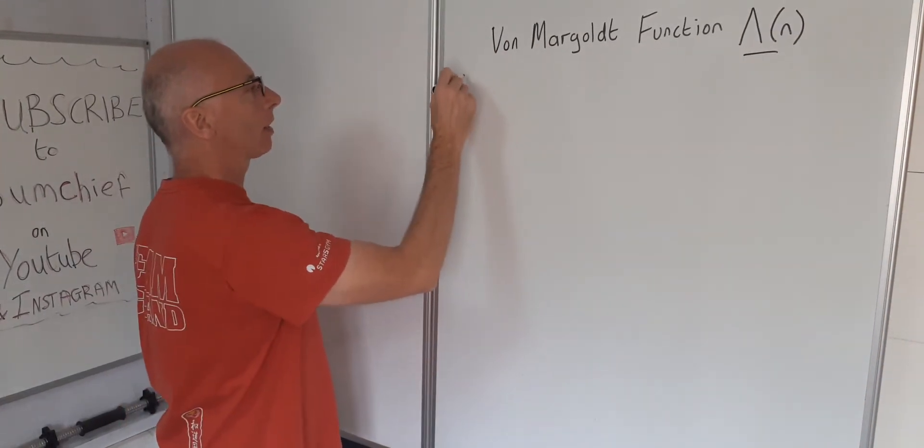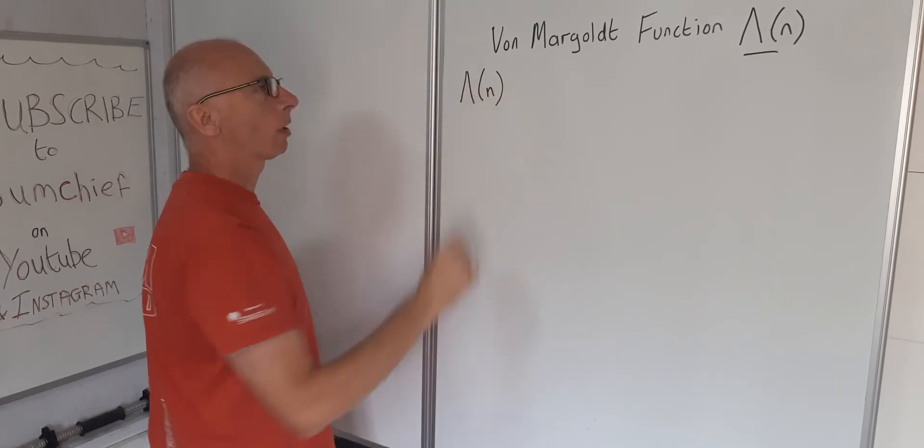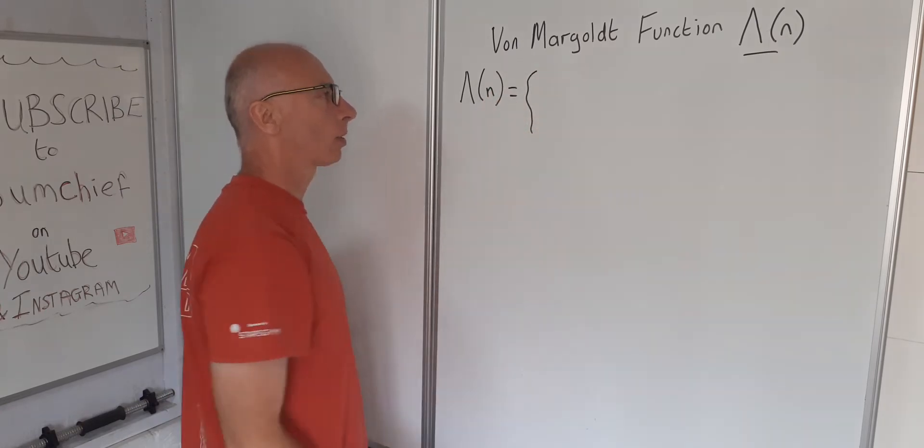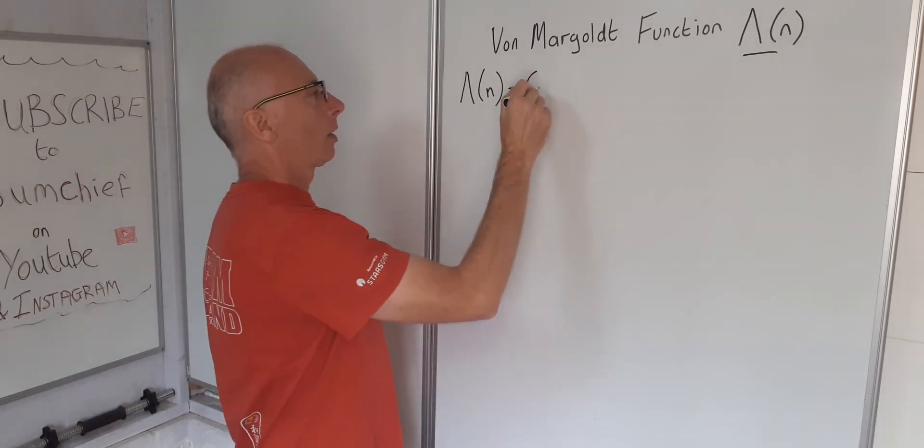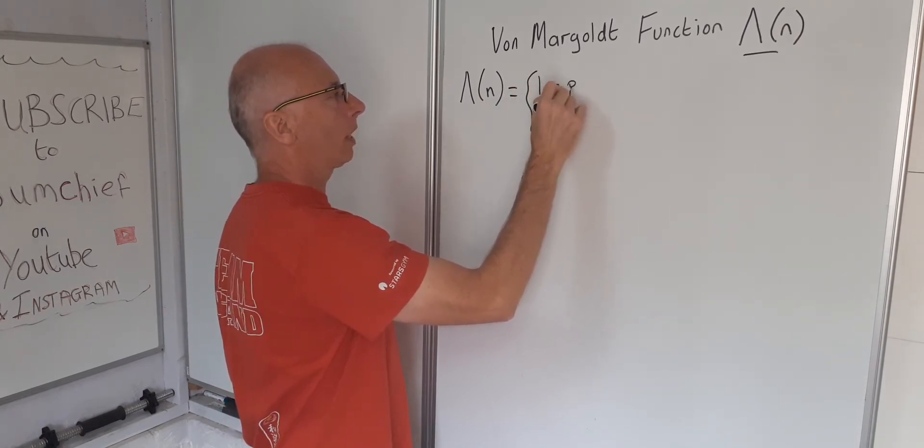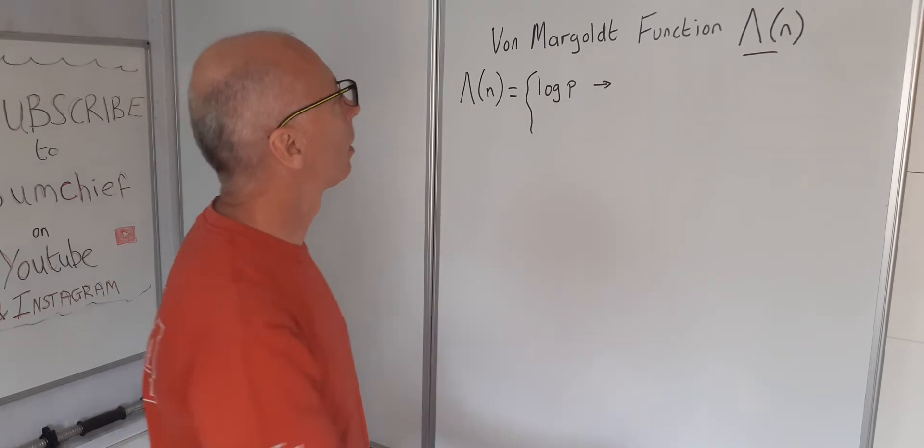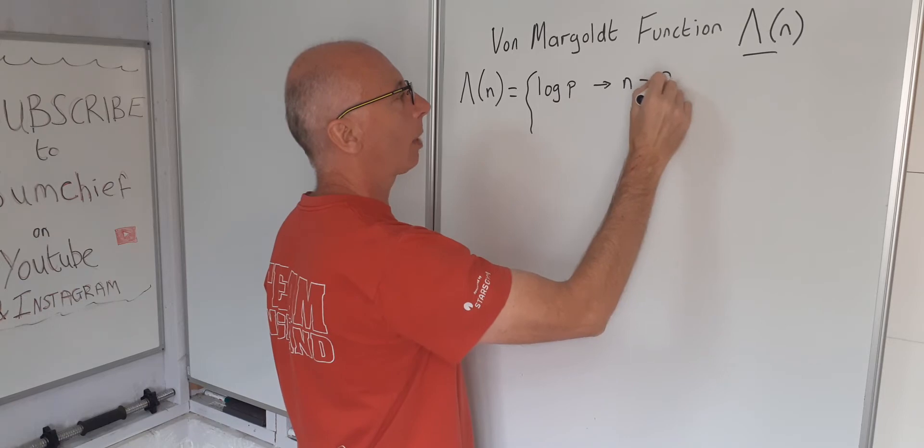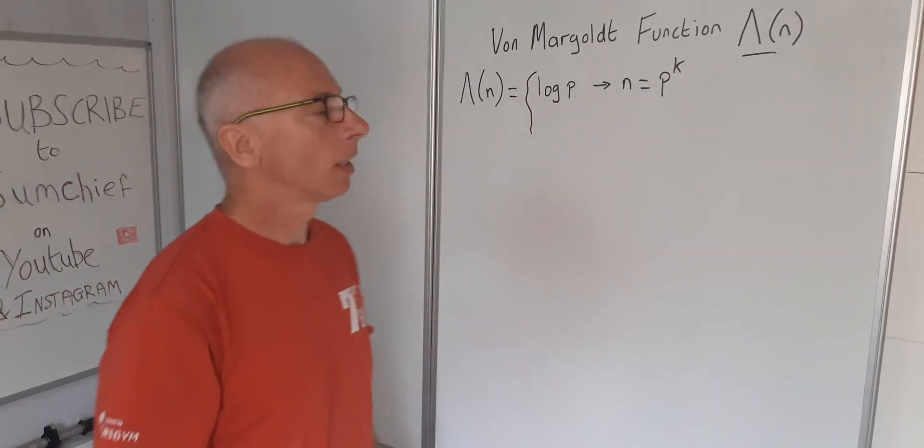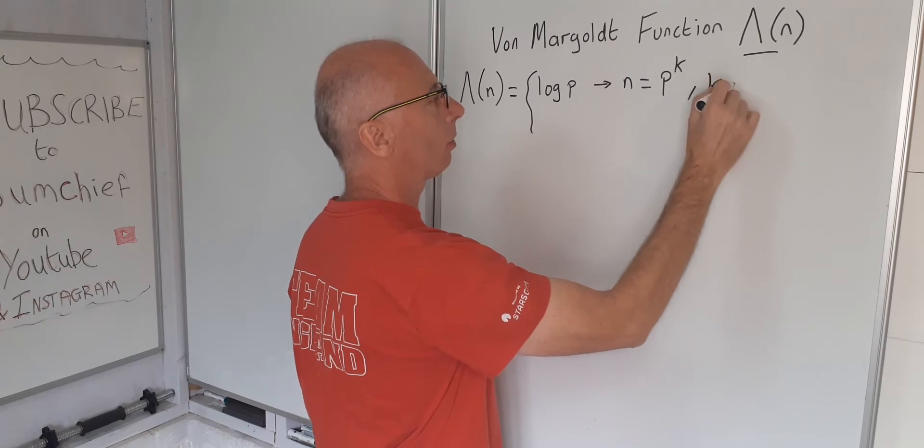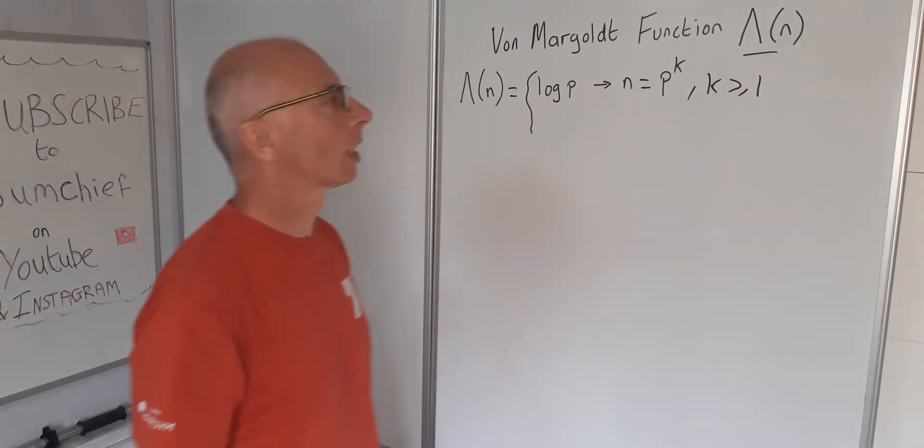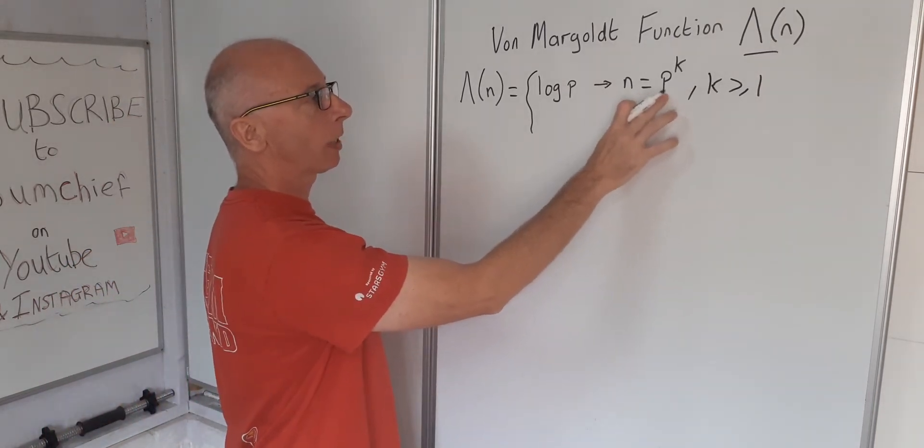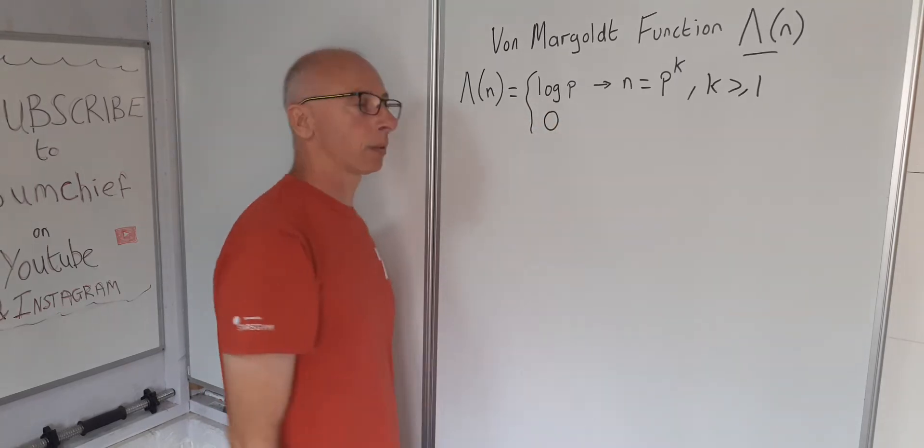Okay, so what we do know is that the von Mangoldt Function for any number n is a piecewise function and it takes on two values. So it takes on the value log of P if n equals P prime number to the power of K, okay, for some K which is greater than or equal to one. And if it doesn't, if you can't equal n equals P to the K some prime number, then it just takes the value of zero.